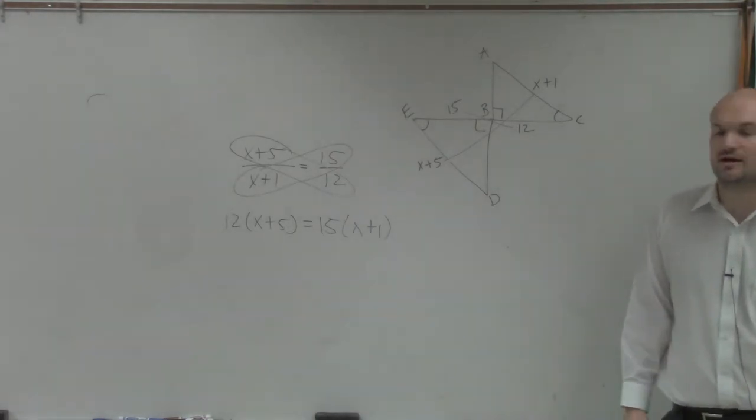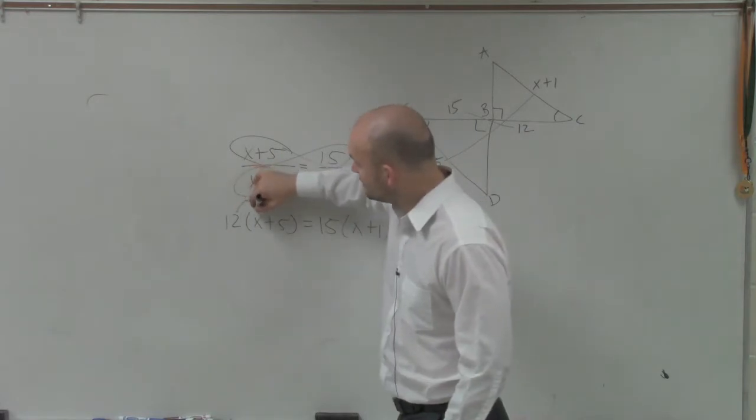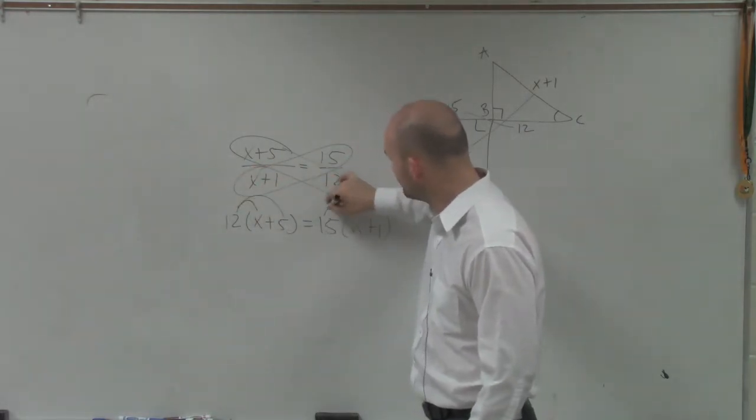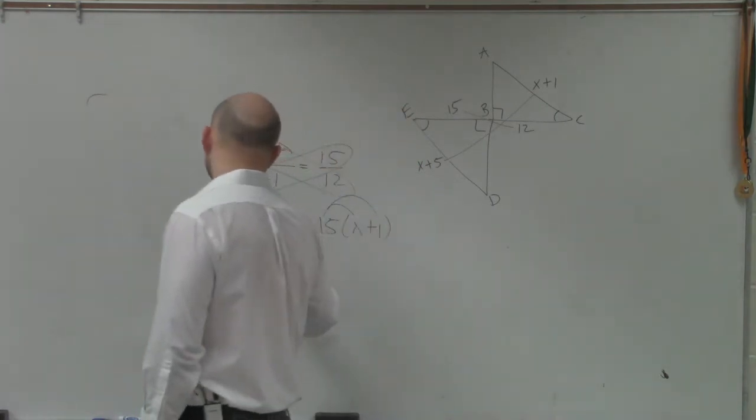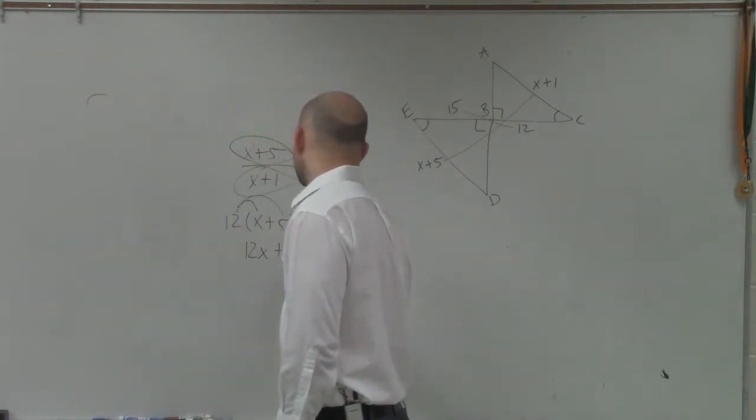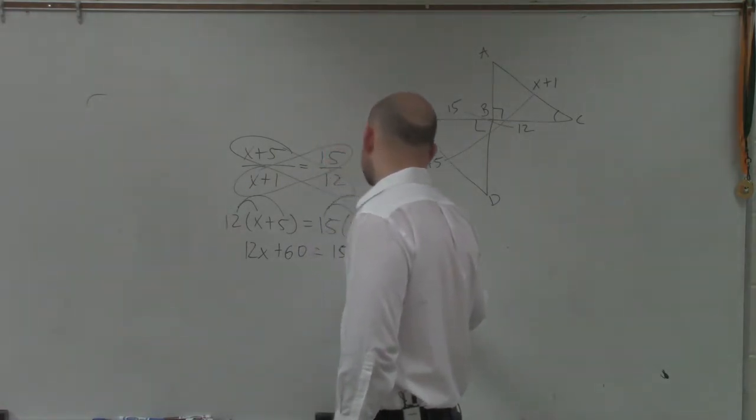So what I do, Camilla, as you're writing this down, is I rewrite it as the product. And then I tell myself, make sure you distribute. All right, so 12 times x is 12x. 12 times 5 is 60. Plus 15 times x, or that's equals. That's 15x plus 15.